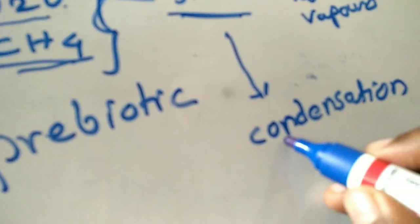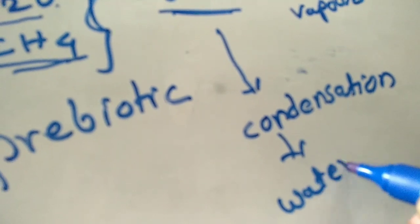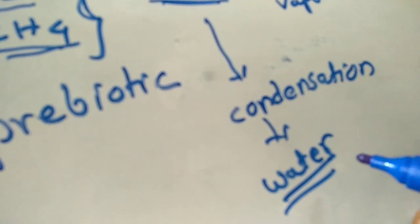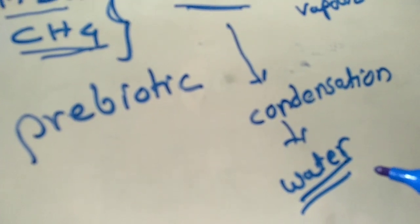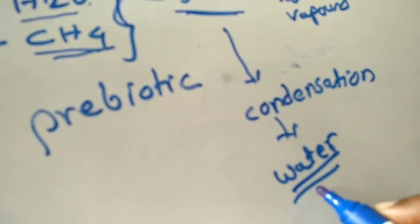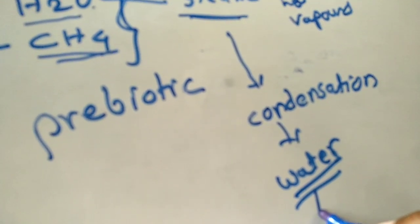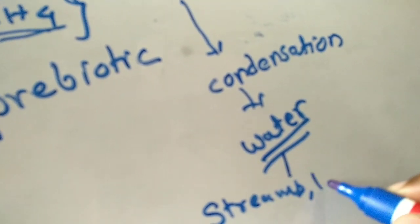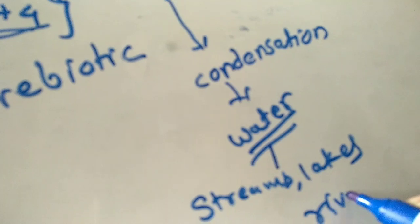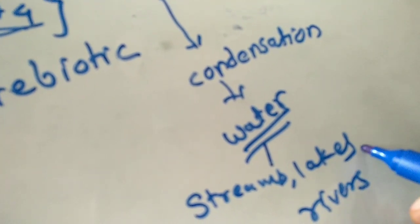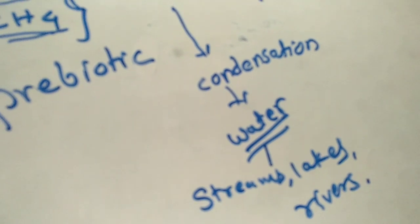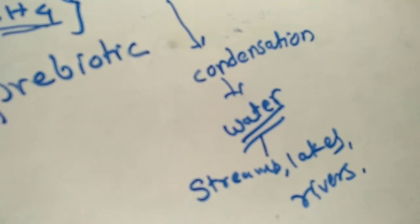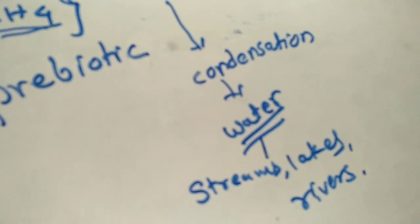As time passed, the temperature of the earth cooled down. When it cooled down, the steam underwent condensation and water was formed. Due to the presence of water, the temperature on the earth cooled further, and this water gradually accumulated — streams, lakes, and rivers were formed on the earth.